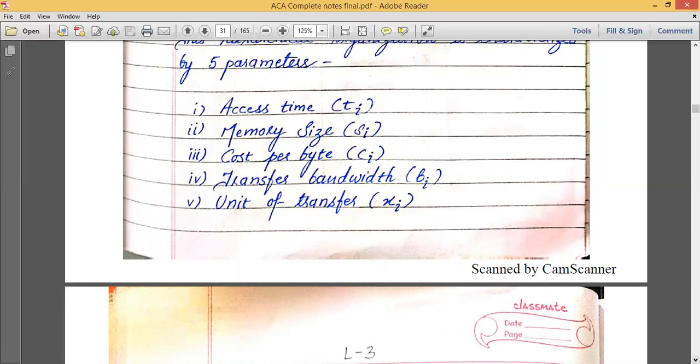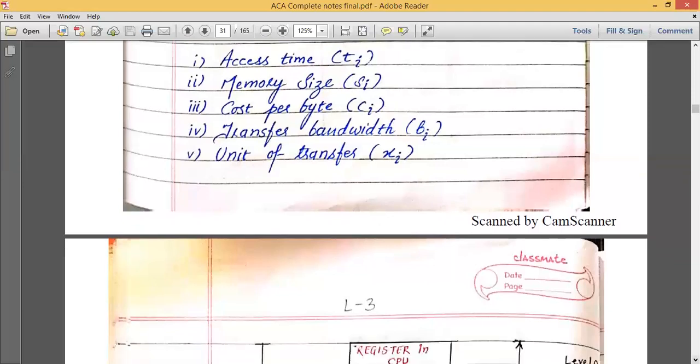Now next is unit of transfer. Unit of transfer is the minimum or the unit by which memory transfers its data. Suppose if we talk about register, it transfers the data bit by bit because it holds bits. If we talk about USB, we can do KB or MB per second data transfer. And so on. So unit of transfer is also different from different memory devices.